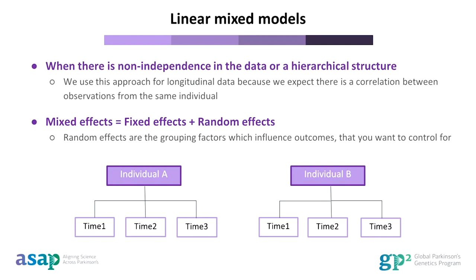This is because the observations from one individual tend to be correlated, due to lots of factors that you don't necessarily measure or know of. The individual is a grouping factor that we know influences the observations, but we aren't usually interested in drawing conclusions about the effect for one individual on progression. The concept of random effects compared to fixed effects can be tricky to understand, and what you choose to be your fixed or random effects can also depend on your research question. I've included some additional links at the end of this talk which might be helpful in explaining these concepts in more detail.